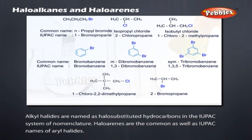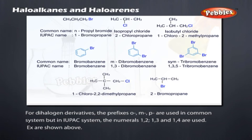Nomenclature: alkyl halides are named as halo-substituted hydrocarbons in the IUPAC system. Haloarenes share common as well as IUPAC names for aryl halides. For dihalogen derivatives, the prefixes o-, m-, p- are used in the common system, but in the IUPAC system, the numerals 1,2; 1,3; and 1,4 are used.